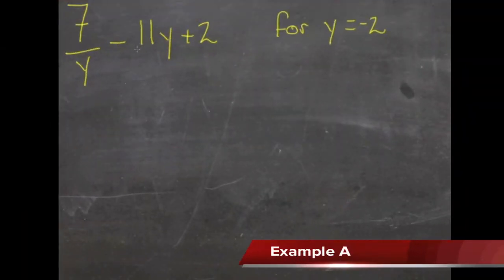In this lesson, we practice evaluating expressions given specific values for the variables in them. Here we have 7 over y minus 11y plus 2, and we need to evaluate it assuming that y equals negative 2.